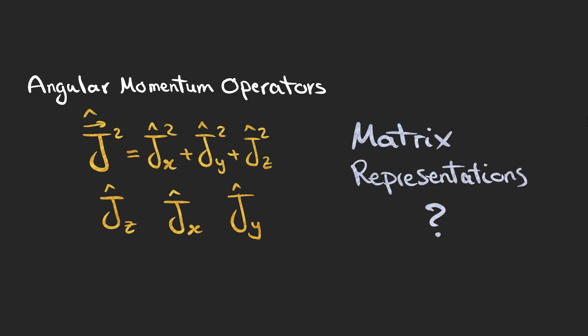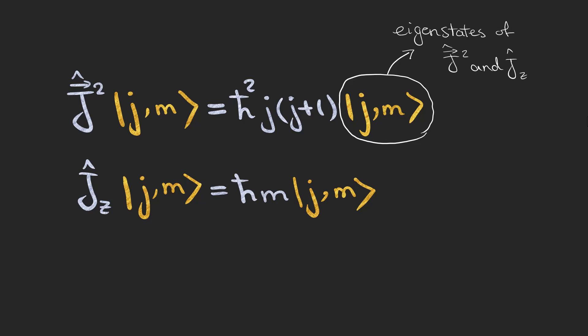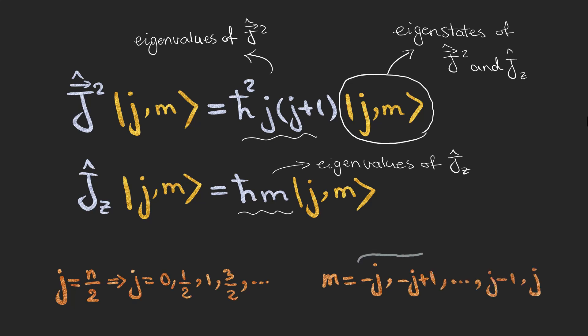In this video, we are going to find the matrix representations of angular momentum operators. These are the two expressions we derived in the previous video, in which these are the simultaneous eigenstates of J squared and Jz. These are the eigenvalues of J squared and the eigenvalues of Jz, which are h-bar m. J's are quantum numbers associated with angular momentum J squared and are non-negative half integers, and m's are quantum numbers associated with the z component of the angular momentum and have 2j plus 1 values based on each j.